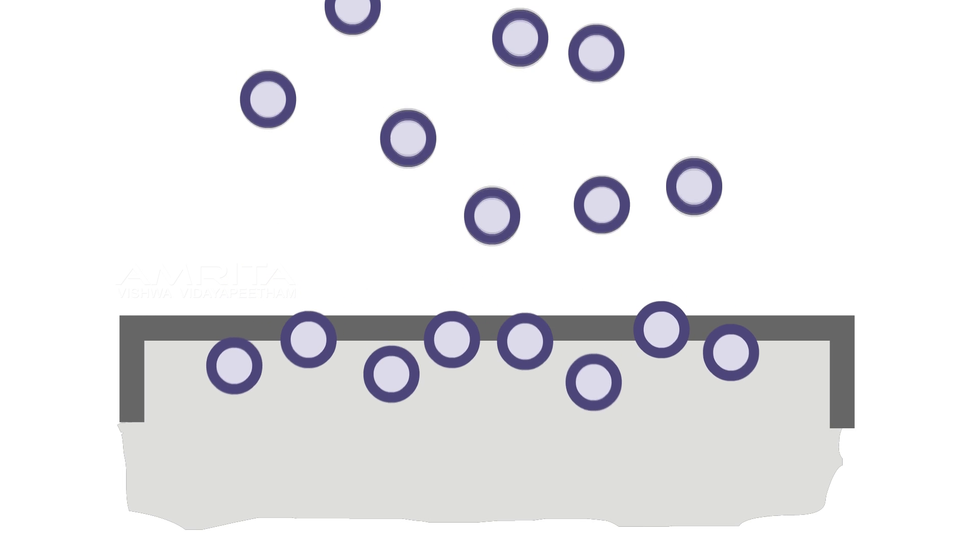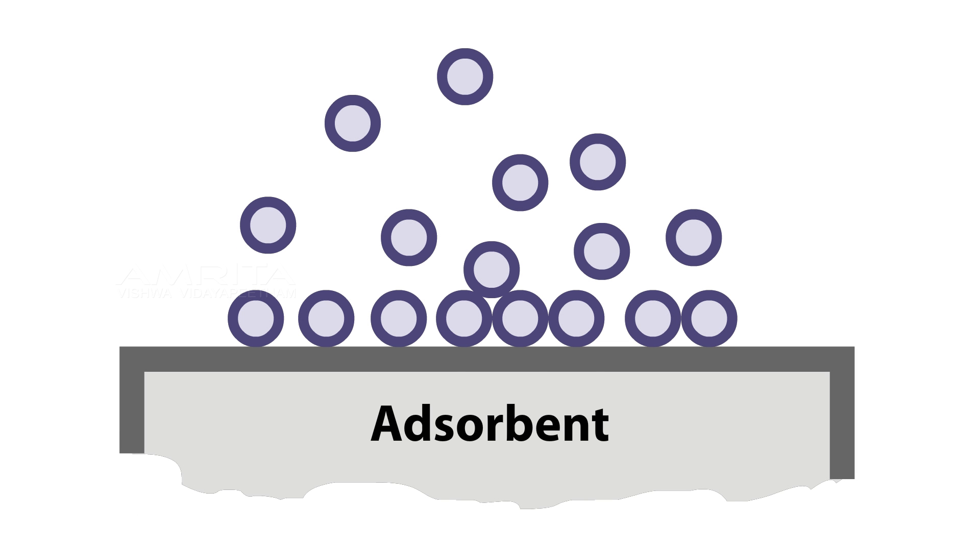It differs from absorption in which a fluid permeates or is dissolved by a liquid or solid. In the process of adsorption, two substances are involved. They are adsorbent and adsorbate.